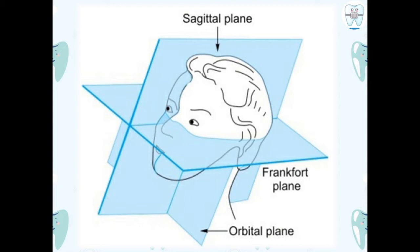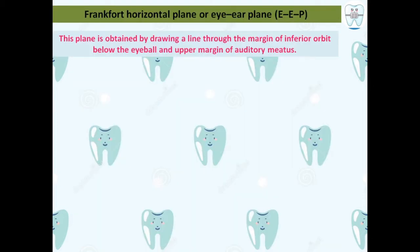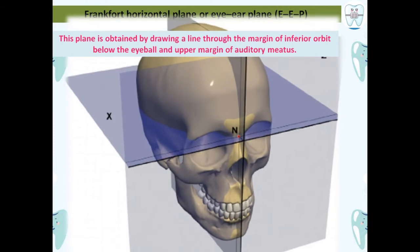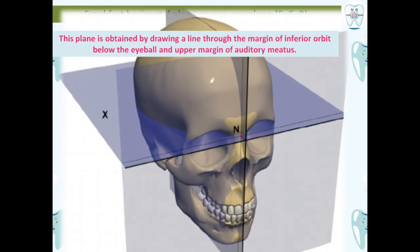The Frankfurt Horizontal plane, also called the eye-ear plane (EEP), is obtained by drawing a line through the margin of the inferior orbit below the eyeball and the upper margin of the auditory meatus. The line marked as Z in the figure represents the FH plane.